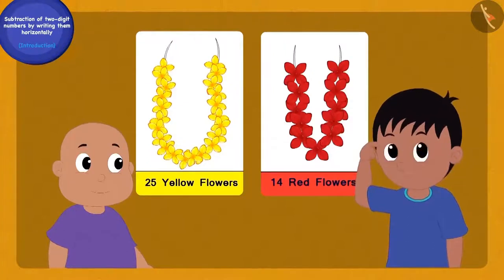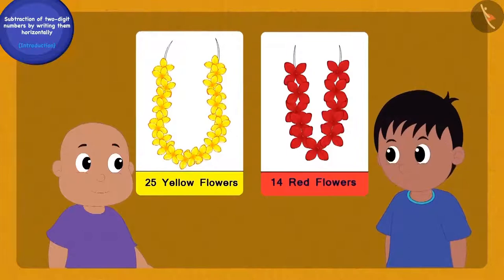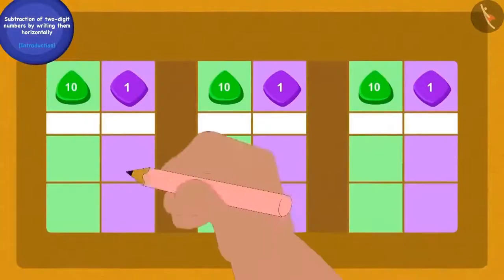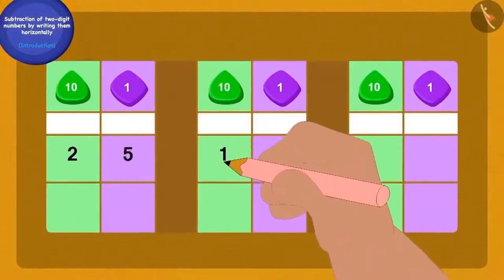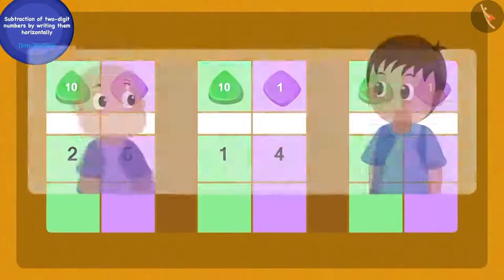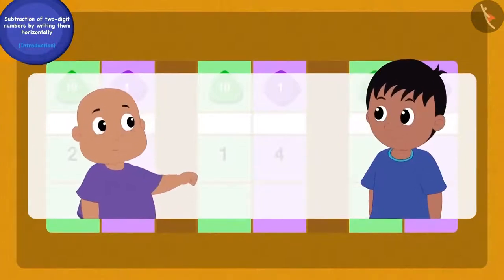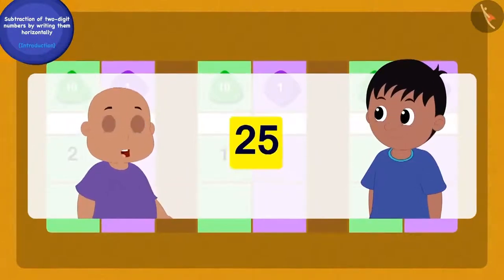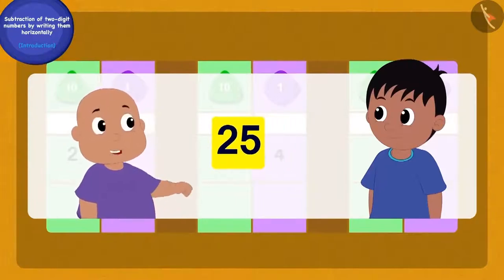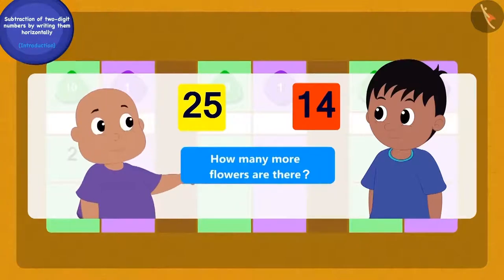Raju, can you tell me how many more flowers are there in Chanda's yellow flower garland than her red flower garland? Raju scratched his head and said, no, Bablu, I cannot tell. Then Bablu wrote the question on a paper in this manner. Raju could not understand anything.